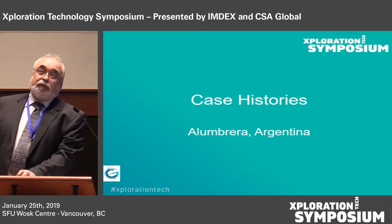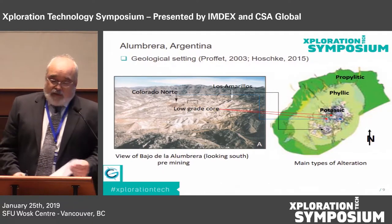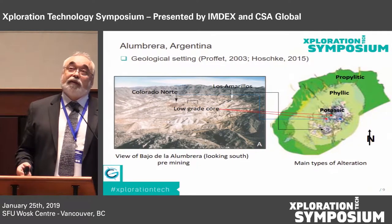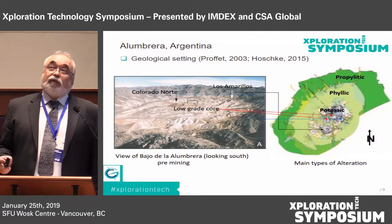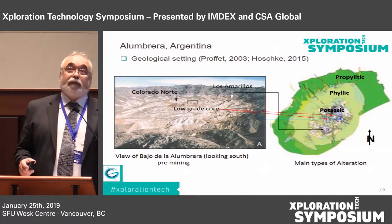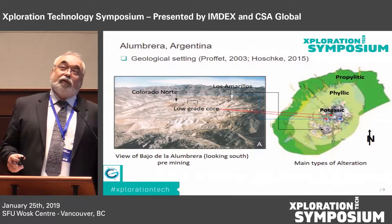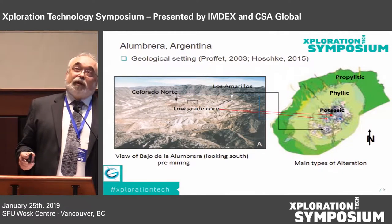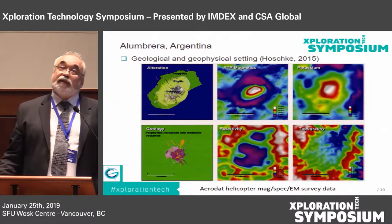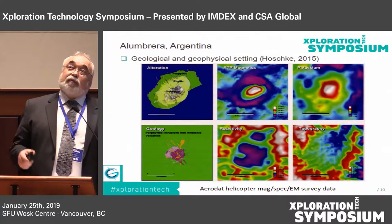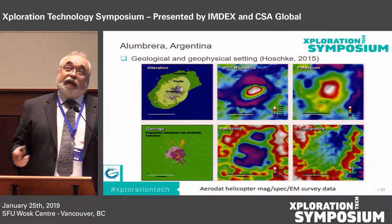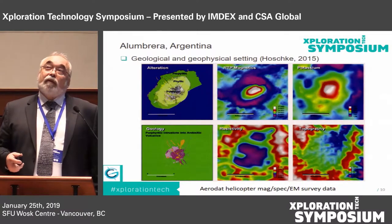The first case history is Alambrera in Argentina — a well-known deposit where the alteration has been mapped out. We've got propylitic, phyllic, and potassic alteration, each with its own distinct geophysical response. There are three main areas: Colorado Norte, a high-grade buried zone; Los Amarillos, another high-grade zone; and a low-grade conductive core. Looking at the geophysics, all scaled to the same scale, from the magnetics we've got a magnetic high situated over the core of the deposit, and we're getting a circular ring structure in the areas of magnetite destruction in the phyllic and propylitic zones.